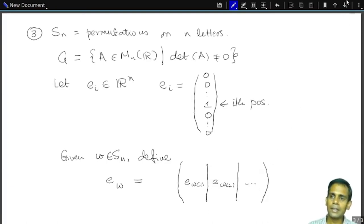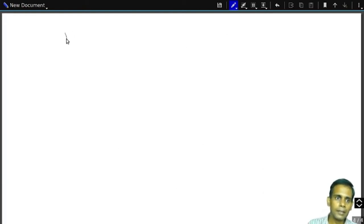So let's just take an example here. So take N equals 3, take ω to be the permutation 2, 1, 3. So that means ω(1) is 2, ω(2) is 1 and ω(3) is 3. Then what is E_ω? E_ω is the matrix whose first column has 1 in the second row. The second column has 1 in the first row and the third column has 1 in the third row.